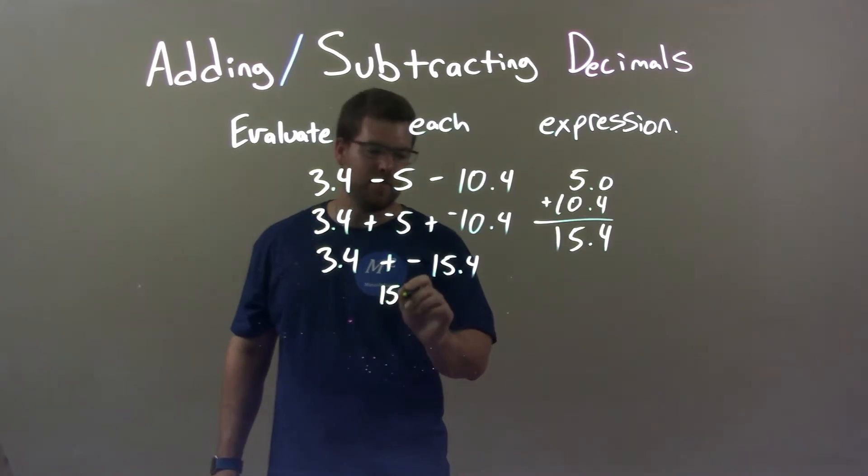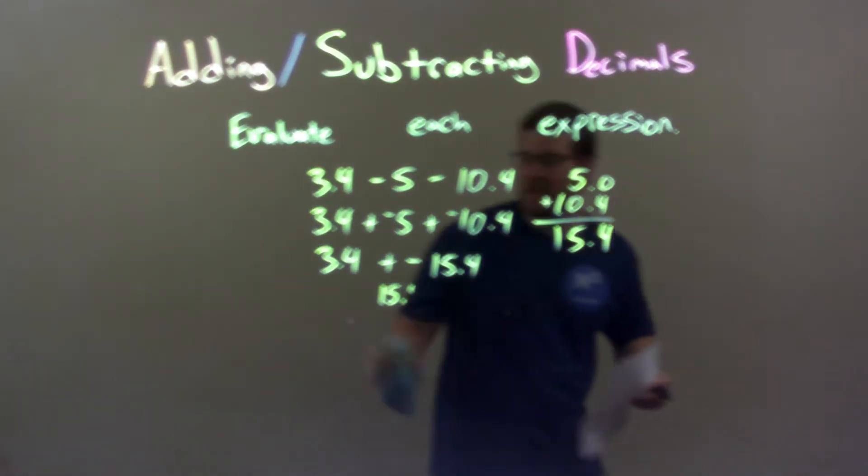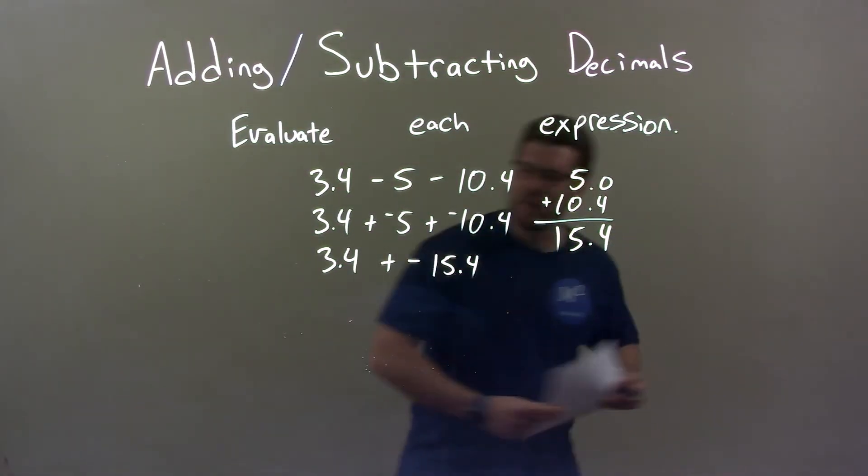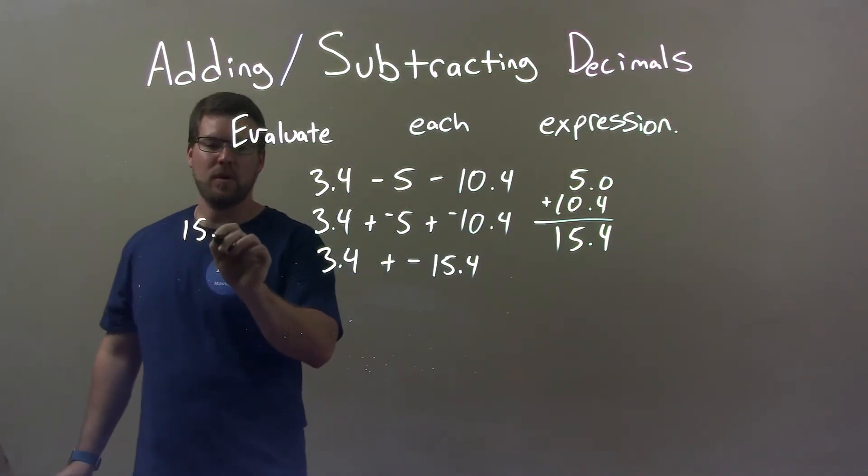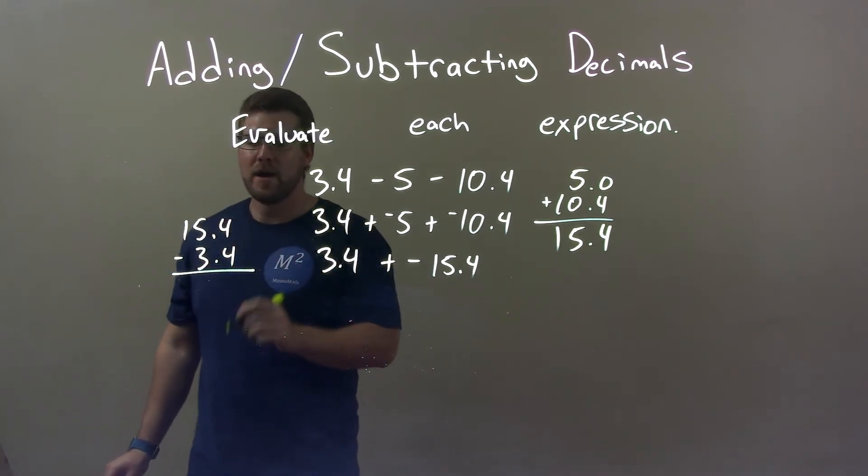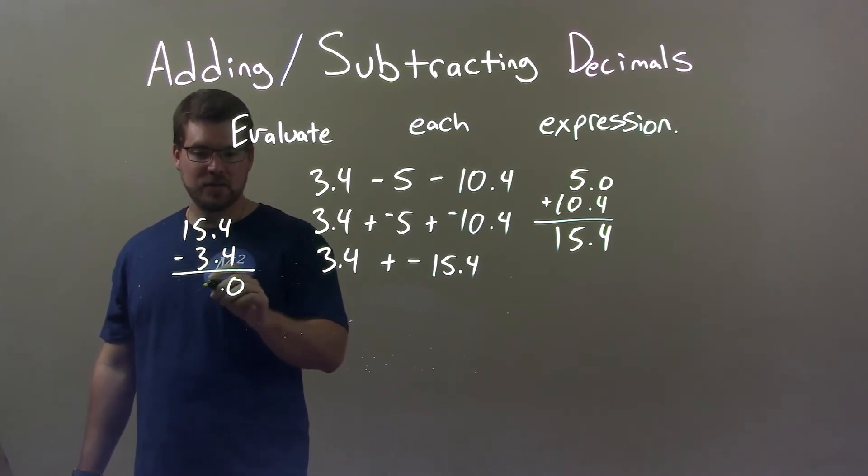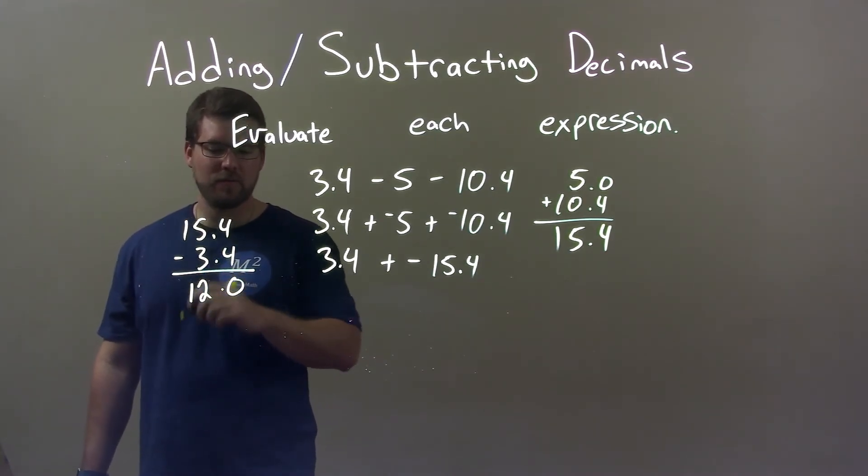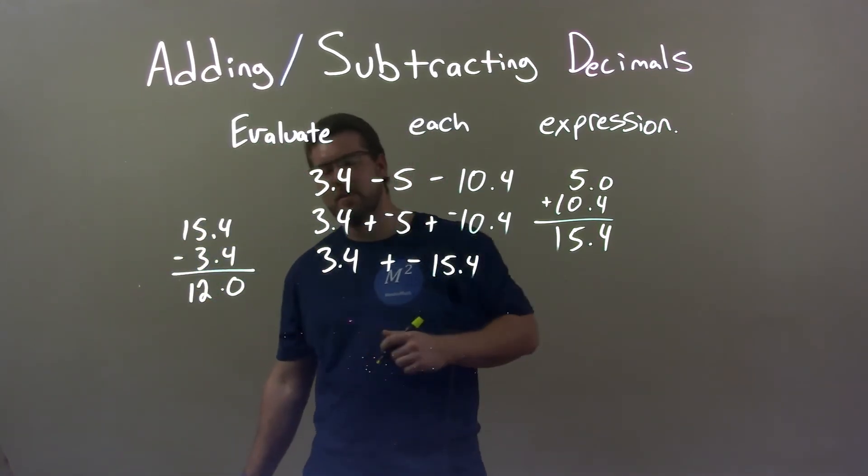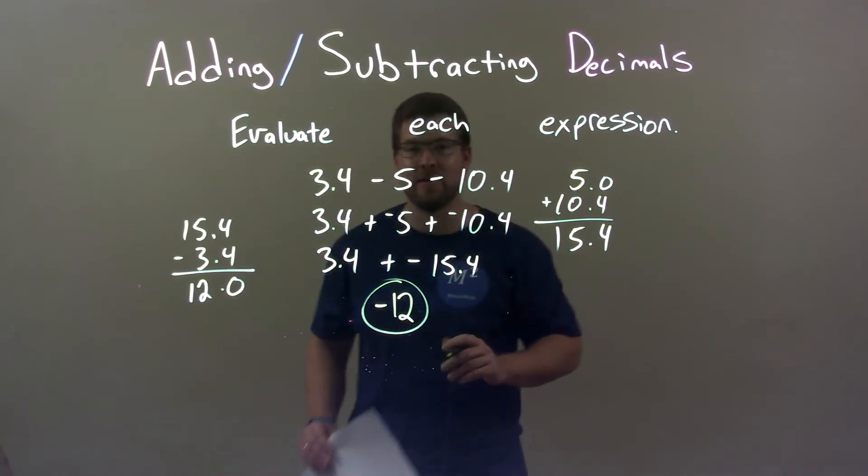So 15. Oops, put it right there. Let's erase that. That's probably not the proper place to put it. So I'll just put it over here to the left. 15.4 subtract 3.4. 4 minus 4 is 0. We're finding the difference here. 15 minus 3 is good old 12. We have 12.0. But we know it has to be negative and we don't really need a .0. And so we have a negative 12 as our final answer.